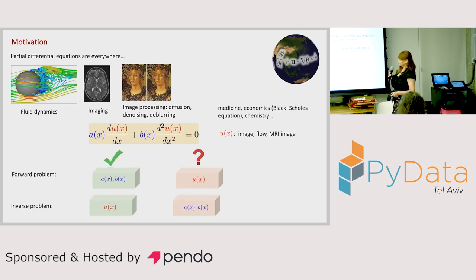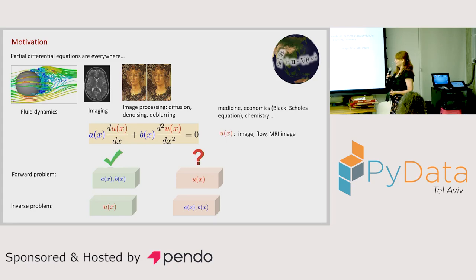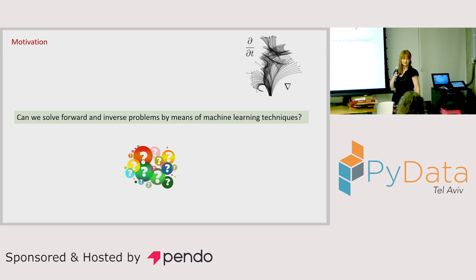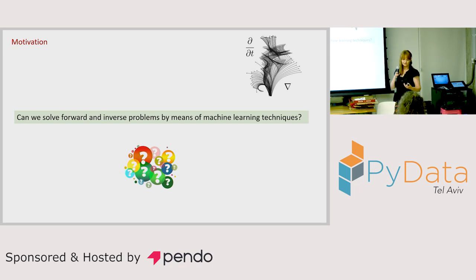The inverse problem is the opposite: we know u, which is usually the measurement, and we are looking for the coefficients A and B. The question is: we studied PDE at university and studied some methods — can we solve these kinds of questions, both the forward and inverse problem, by means of machine learning methods? This is what I'm trying to do here.